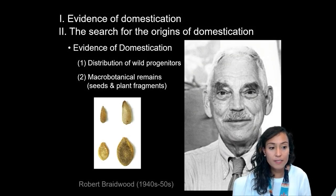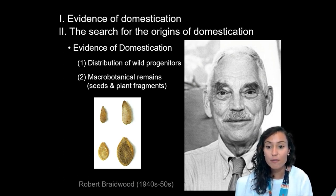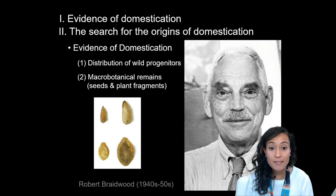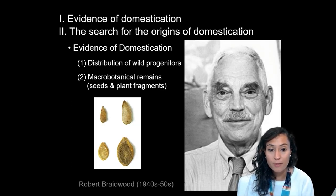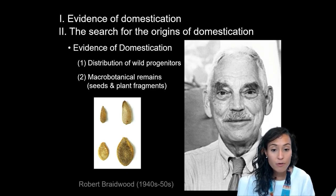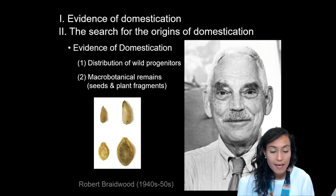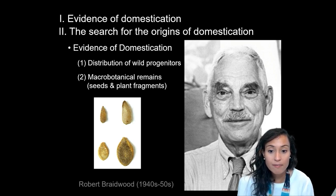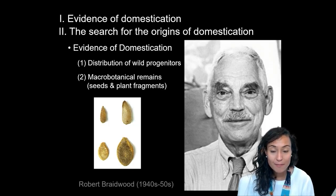Another line of evidence that archaeologists used to examine the origins of domestication is macro-botanical remains — basically the remains of seeds and plant fragments. A pioneer in this regard was Robert Braidwood, who identified seed samples at the Jarmo site in Iraq in 1947. These seeds were radiocarbon dated and produced a date before 6000 BC. Based on this interdisciplinary evidence, Braidwood argued that domestication must have arisen in the natural habitats of wild ancestors, a conclusion very similar to Vavilov's.